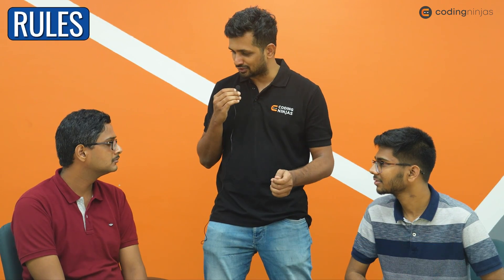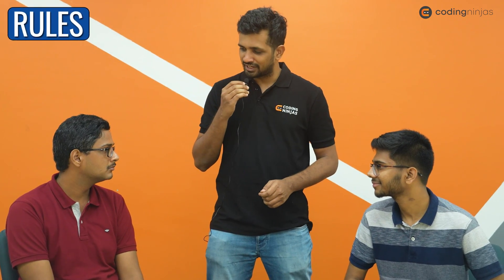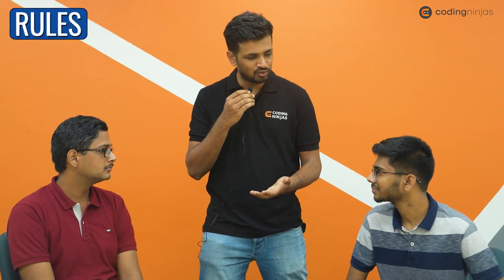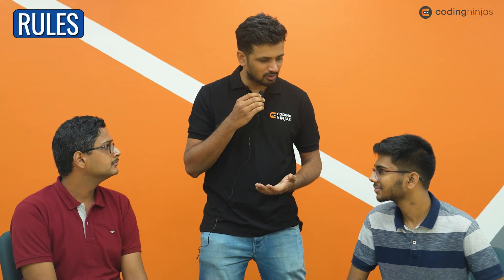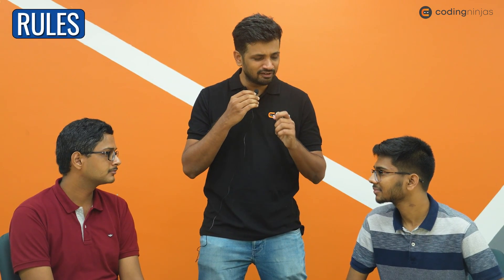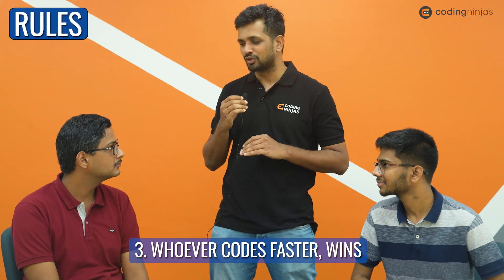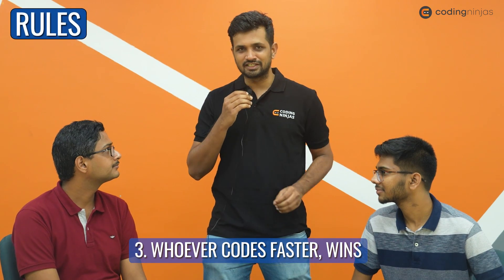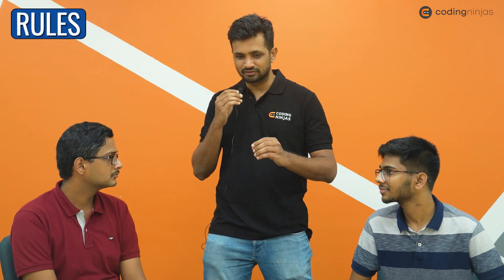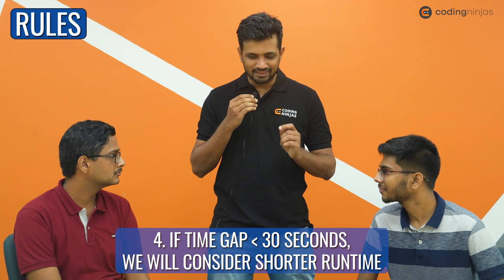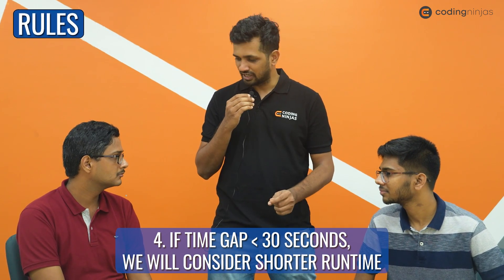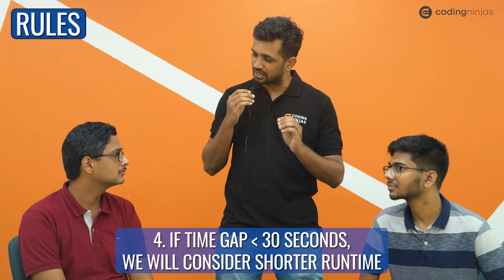What we will be doing to test the coding skills of both of you is timing how long it takes to code. Once I give you the laptop and you start reading the problem, I'm going to start the stopwatch and we will end the time once you successfully submit the code. Whoever codes faster is going to be the winner. But if either of you finishes within 30 seconds of the other, then we will consider a second metric — the runtime of the code. Did you both understand the rules?